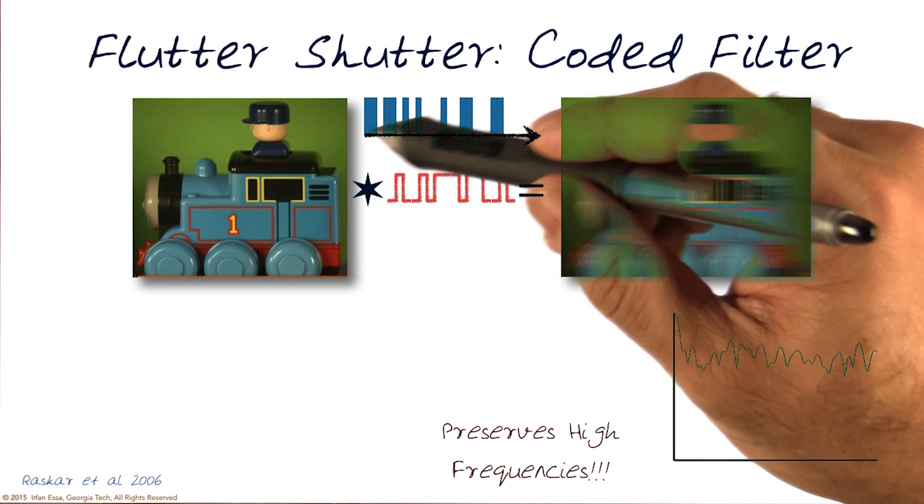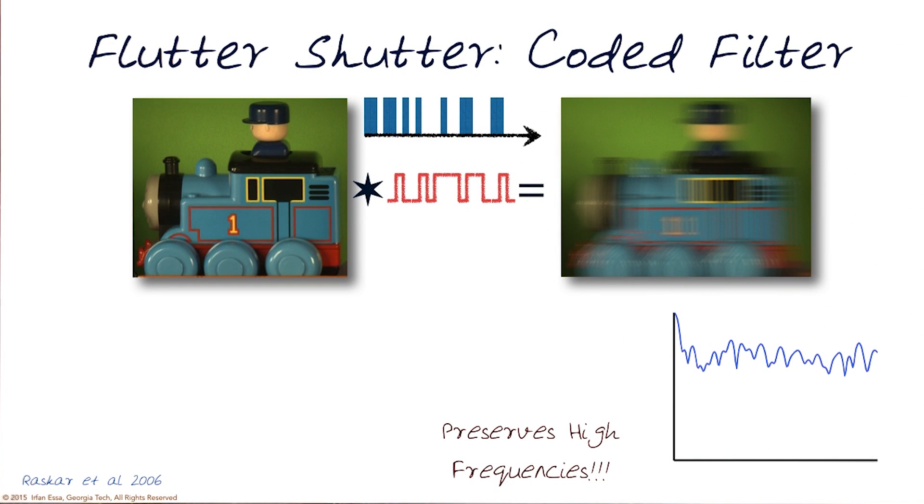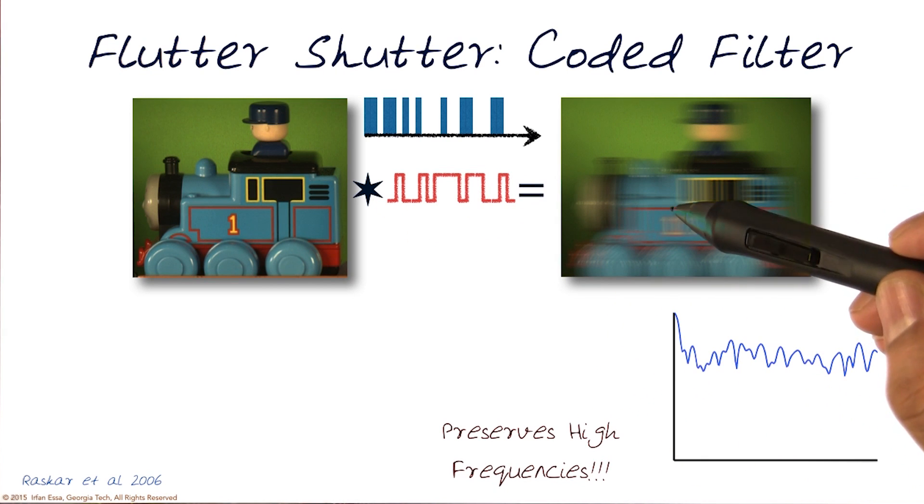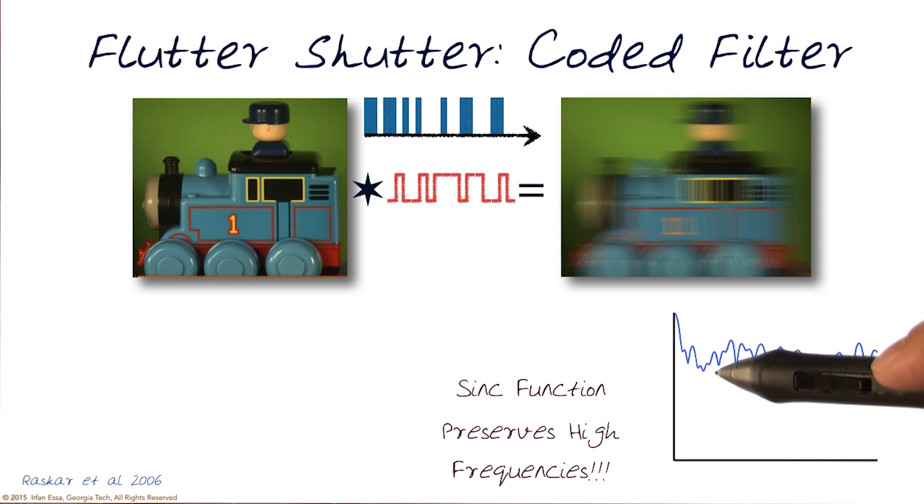When we move to a signal which is now pulsed or flutter shuttered like this, we might have a signal like this. The output we know is convolution of this to this one, and this is also a sync function. The big thing here is it is actually preserving all of the high frequencies.